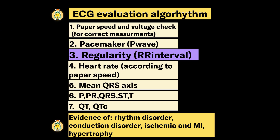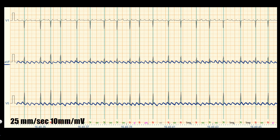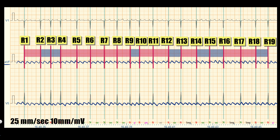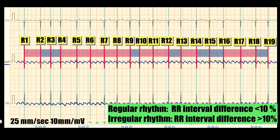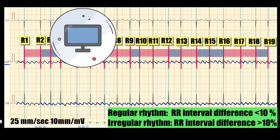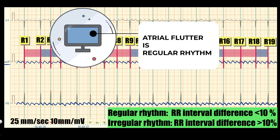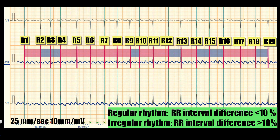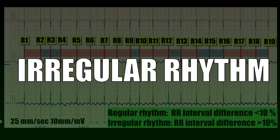The next step is a regularity check. Compare RR intervals to each other, defined as the distances between the peaks of R waves. Rhythm is regular when RR intervals are equal or differ by less than 10%. In some videos, atrial flutter is described as regular, but this is not always true. In our example, even by eye the RR intervals are different, and the difference is much more than 10%, so our rhythm is irregular.